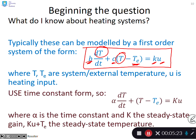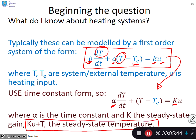What also should I know? This model can be represented in time constant form, so α is the time constant, K is the steady-state gain. The key point is the steady-state temperature T is going to be KU plus TE.